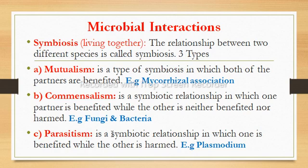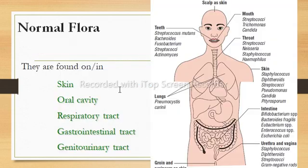The next symbiotic relationship is parasitism. In parasitism, one partner is benefited while the other is harmed. For example, Plasmodium is a parasite that causes malaria in humans — the parasite benefits while the human is harmed.